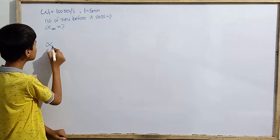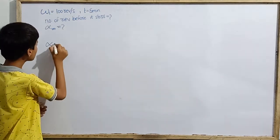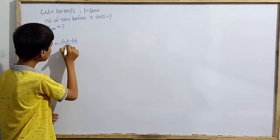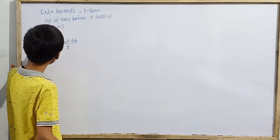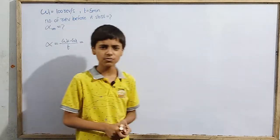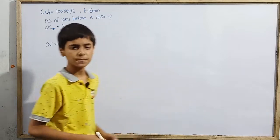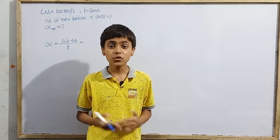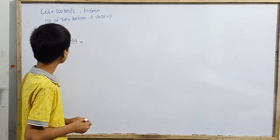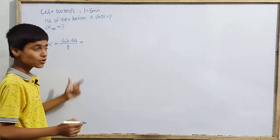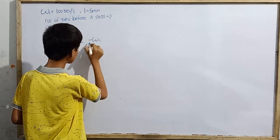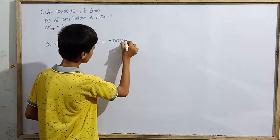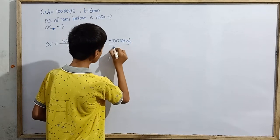The retardation is the negative acceleration. So first of all, we need to find the angular acceleration. Angular acceleration α equals (ω_f − ω_i) / t. Here we have assumed that the angular acceleration is constant throughout the motion. The final angular speed is zero — it comes to rest — so this is: minus ω_initial over time, which is minus 100 revolutions per second over 5 minutes.